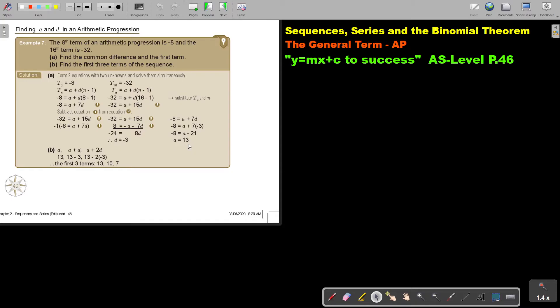There is the common difference. There is the first term. And then find the first three terms of the sequence. This is 13. And then basically you are just going to take that common difference. What is the negative? And you subtract 3 every time.